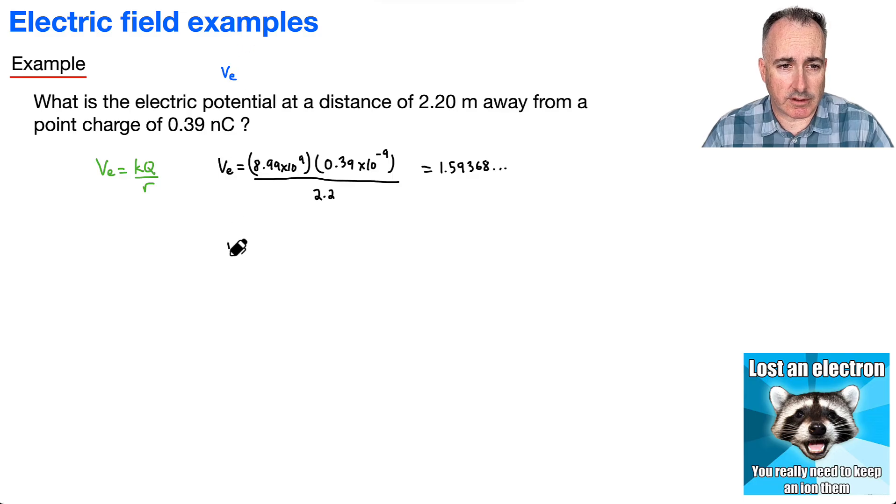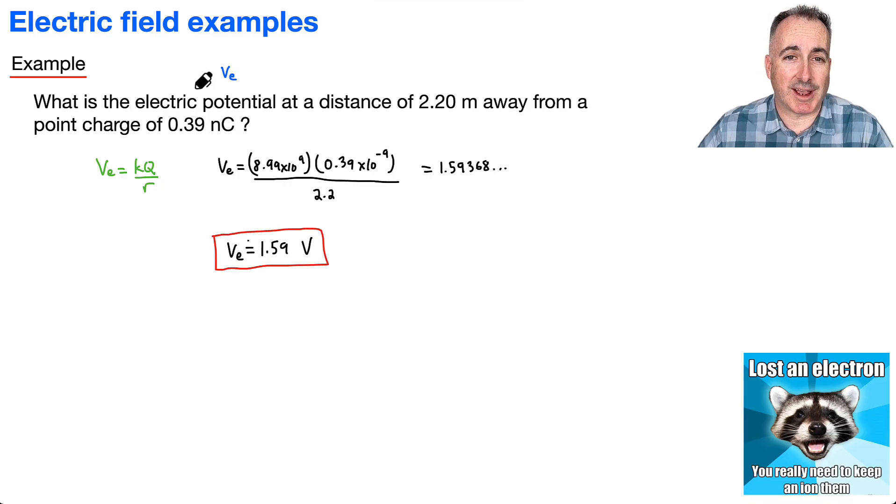Now, if I want that to three significant figures, I'll say VE. Then it's going to be approximately 1.59. And remember, it's in volts, because it's an electric potential. And there we go. That's it. That actually wasn't so bad.